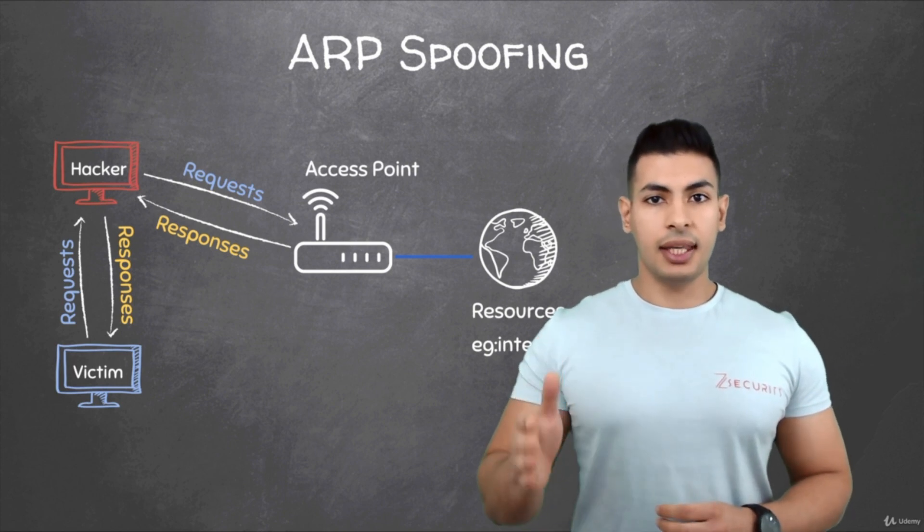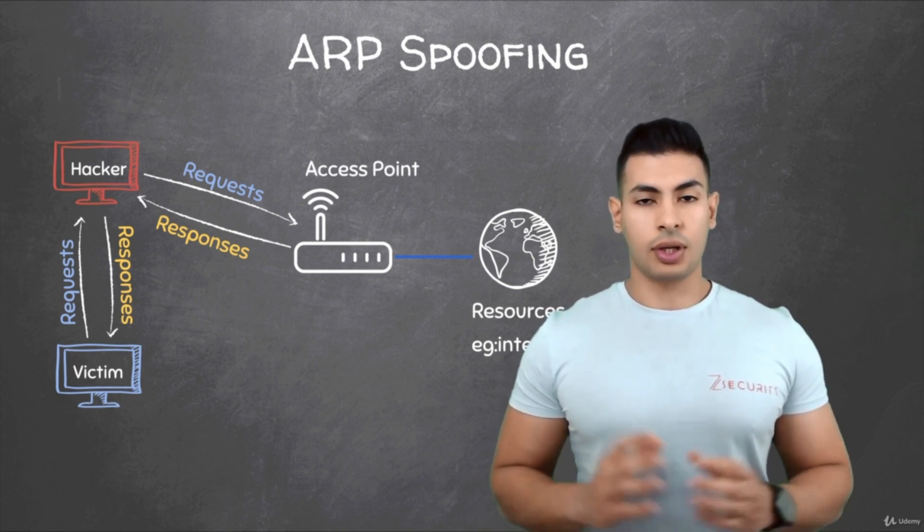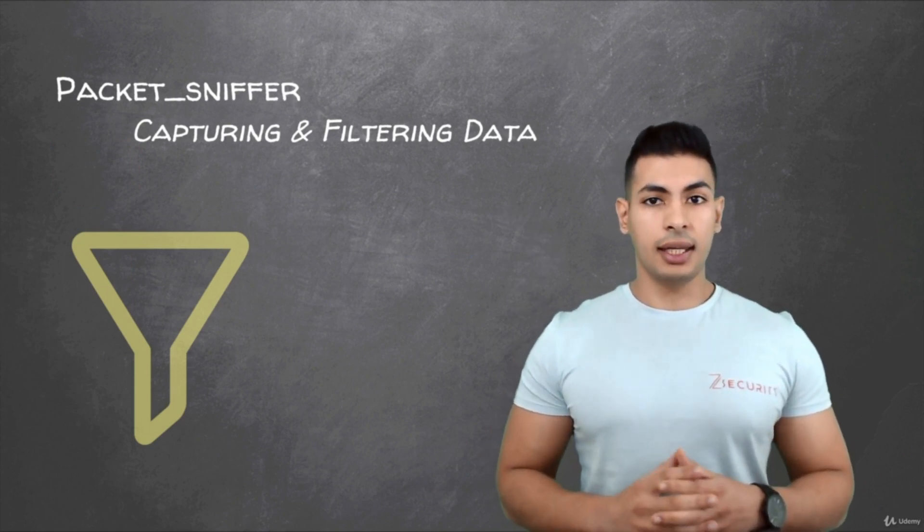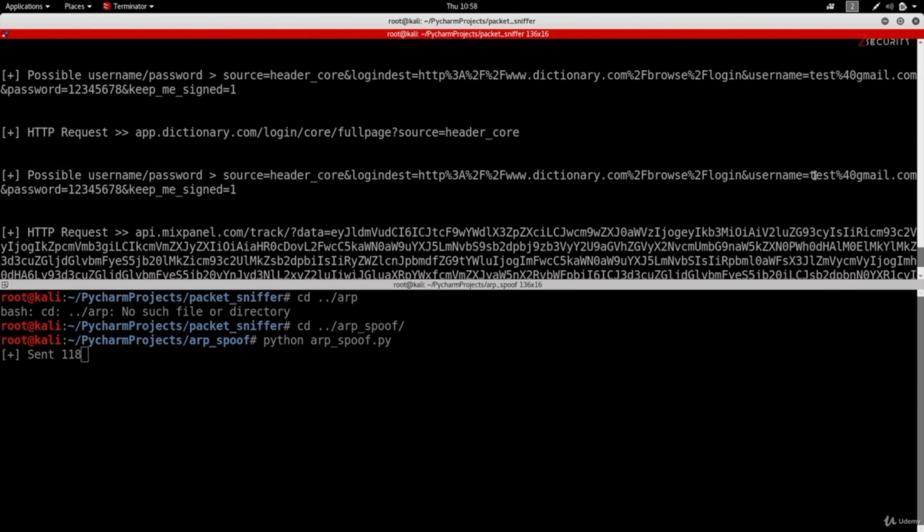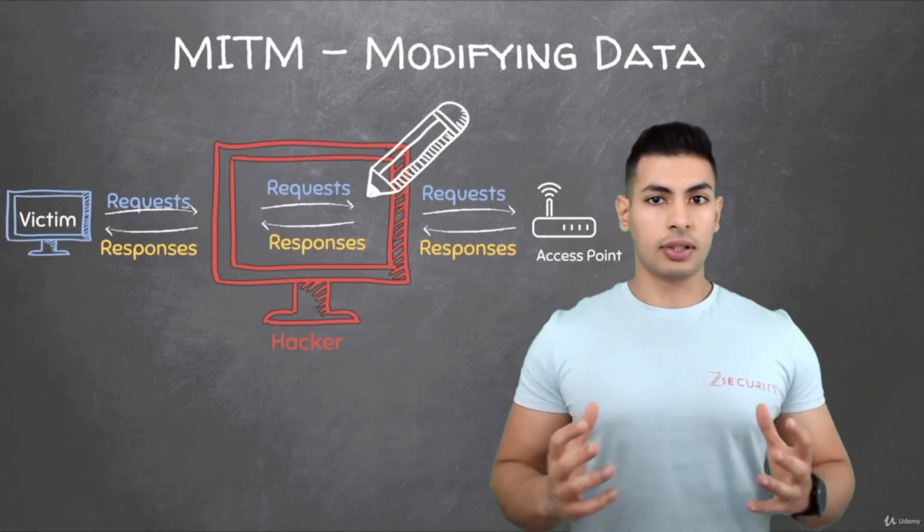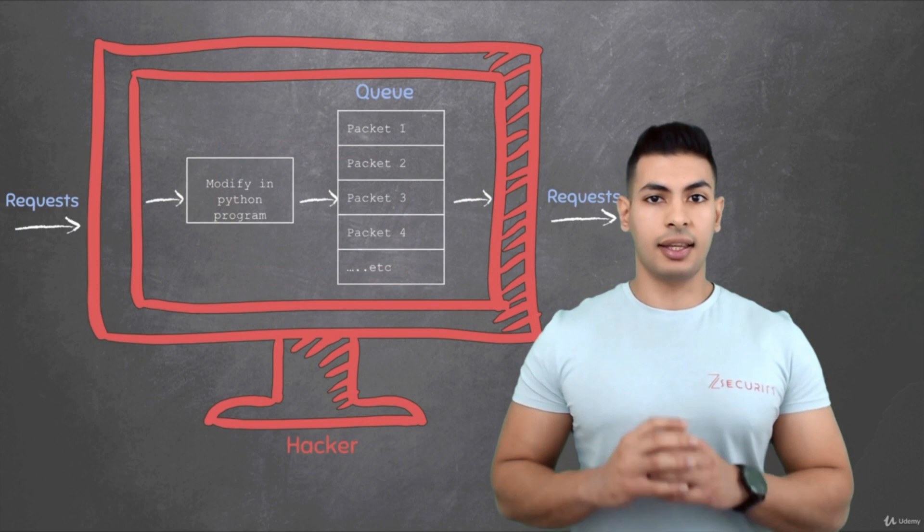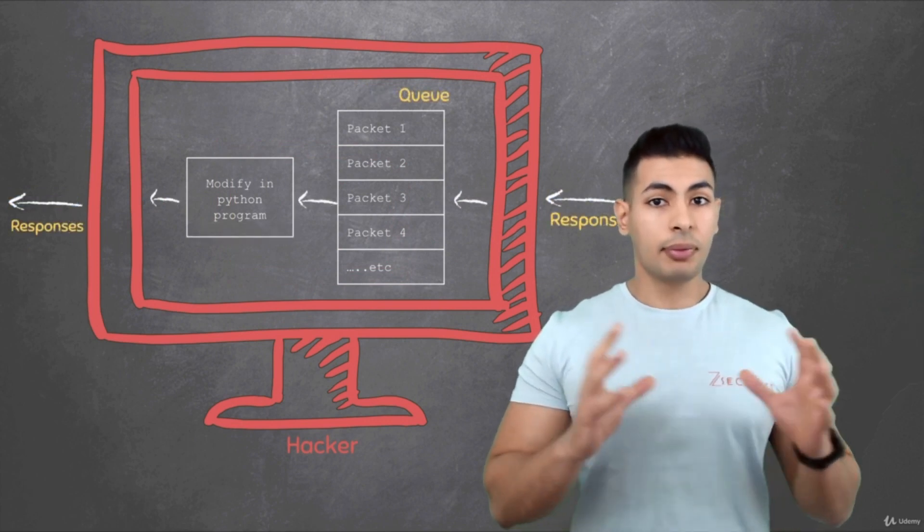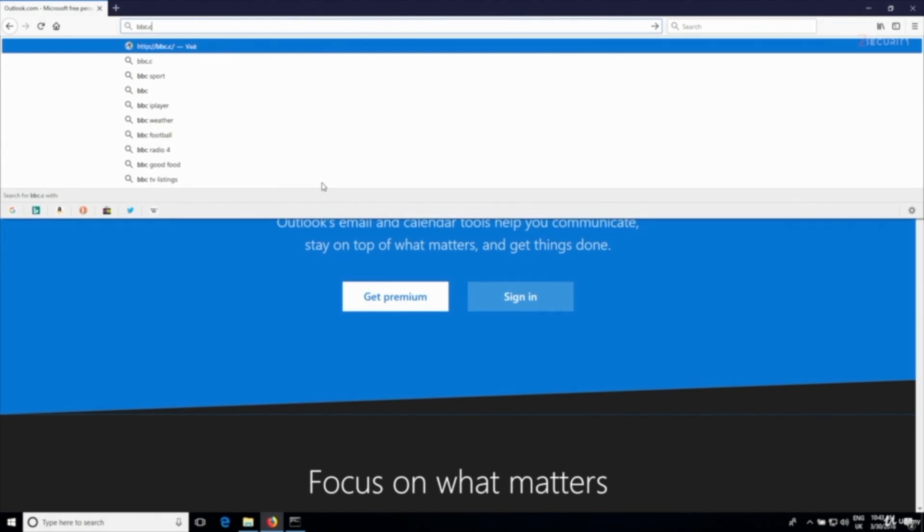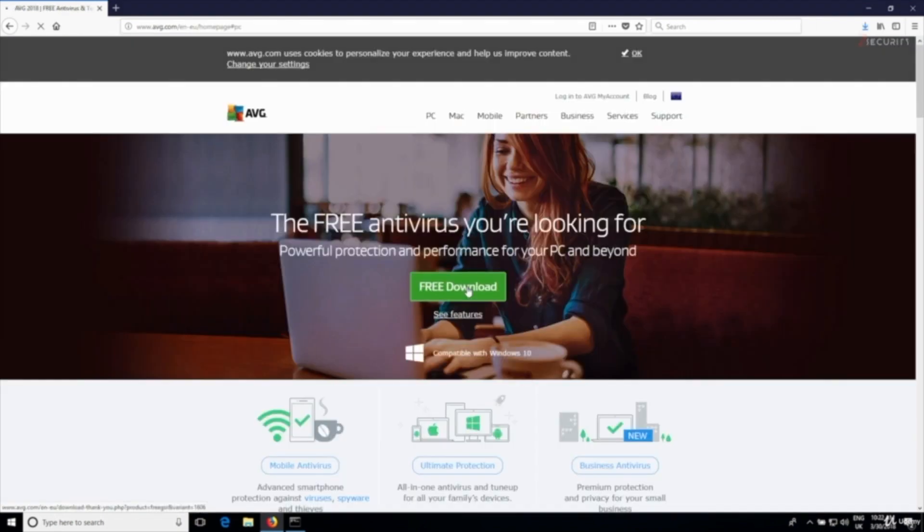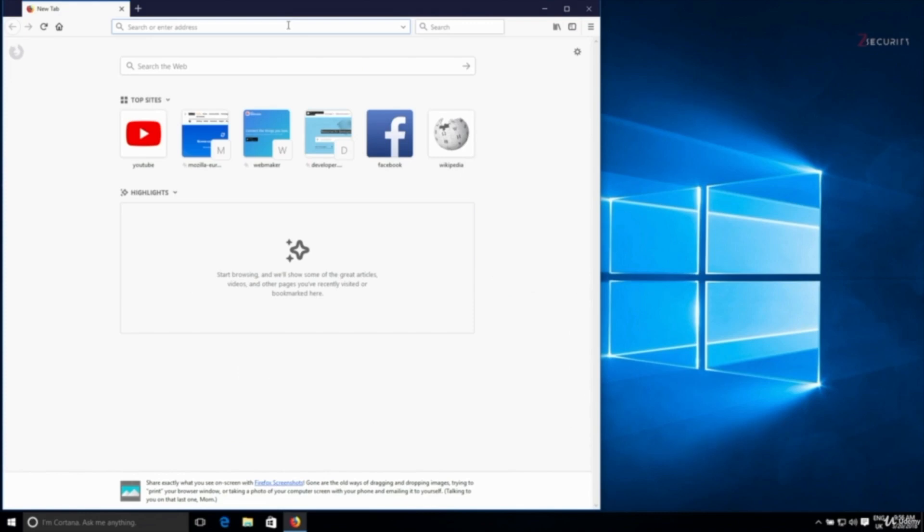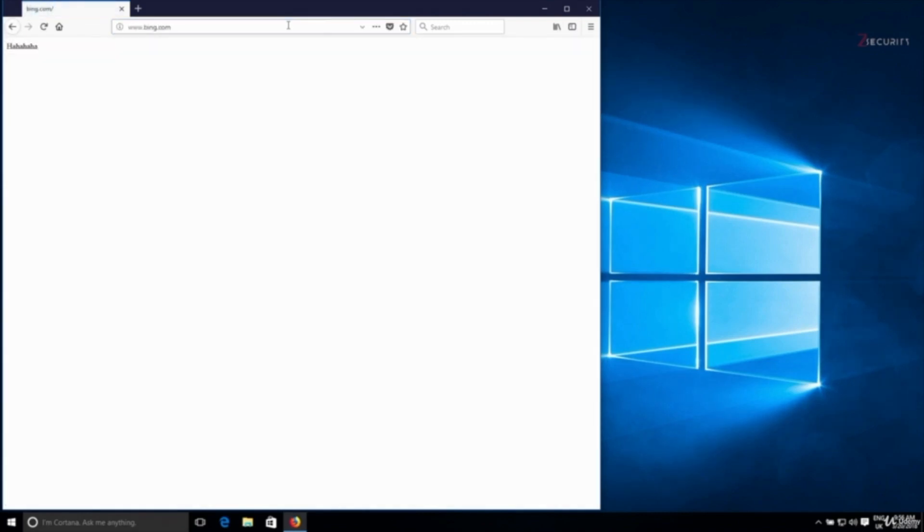Then we're going to dive even deeper in networking. So you're going to learn how to sniff data sent or received by any computer connected to the same network as us. This means we'll be able to see visited websites, login information, passwords, and pretty much everything they do on the internet. You'll also learn how to analyze data sent in the different layers in each packet and how to modify this data. So we'll be able to inject code in HTML pages loaded by any computer on the same network. We'll be able to replace downloads and even spoof DNS requests to any destination we want.